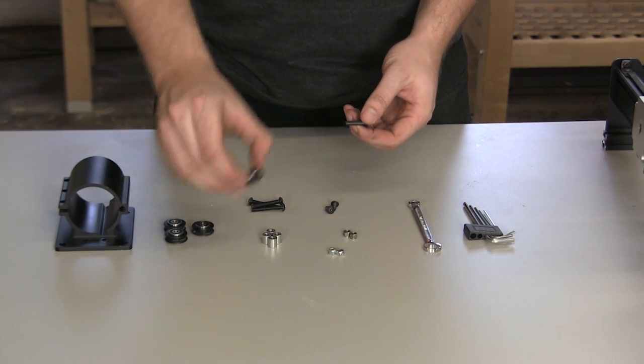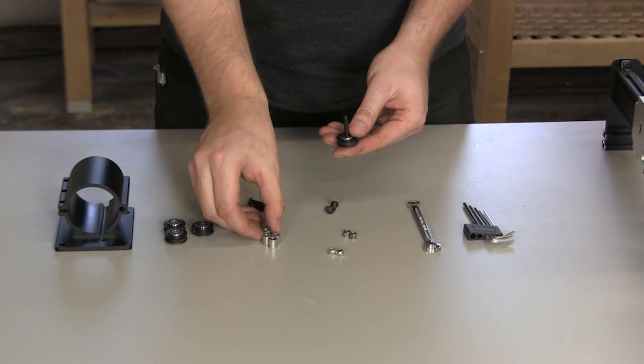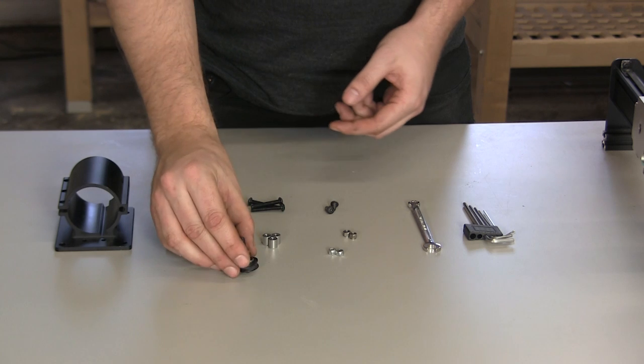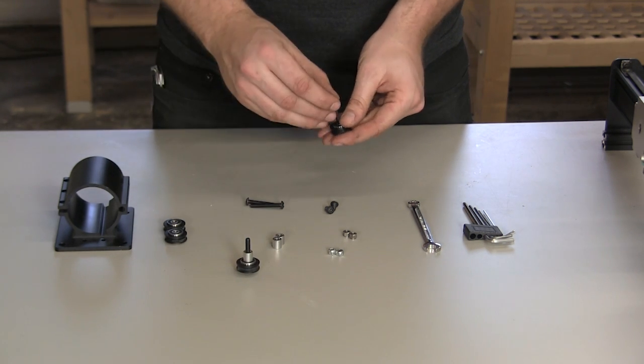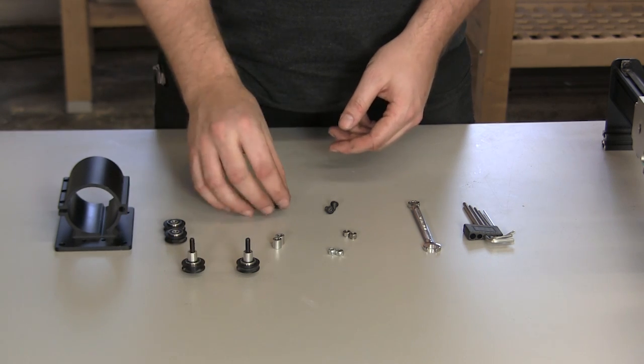Now we'll assemble the 24-volt spindle mount. Start by putting the provided screws through the V-wheels, followed by aluminum spacers.